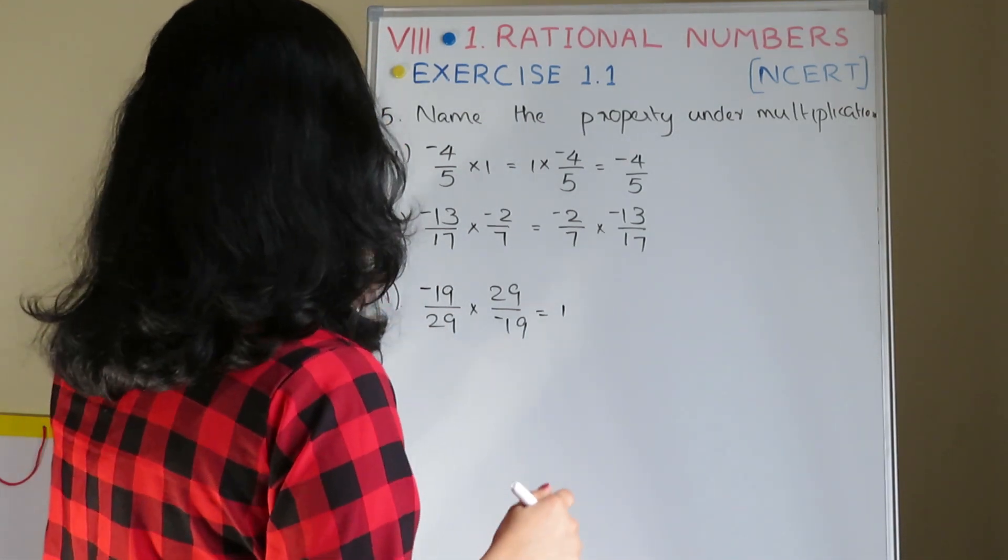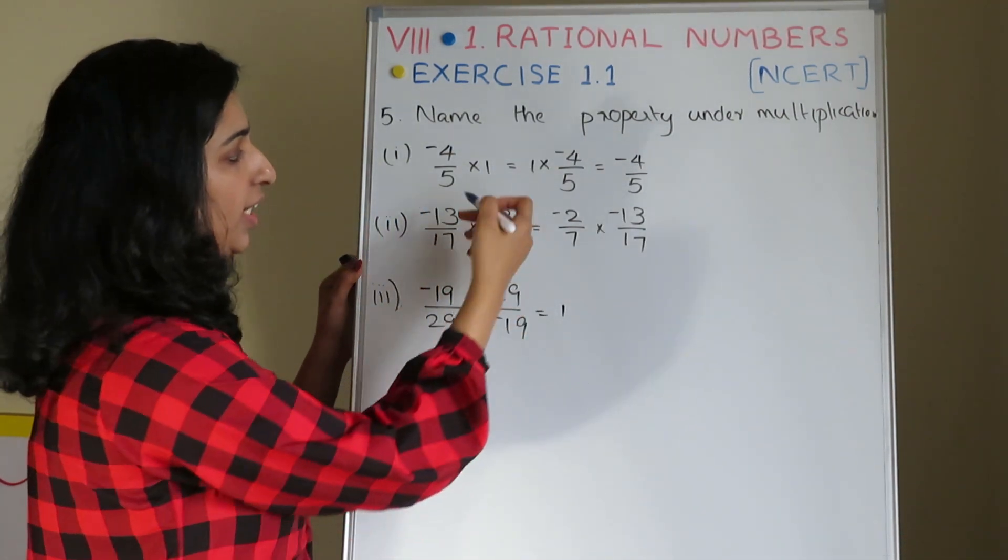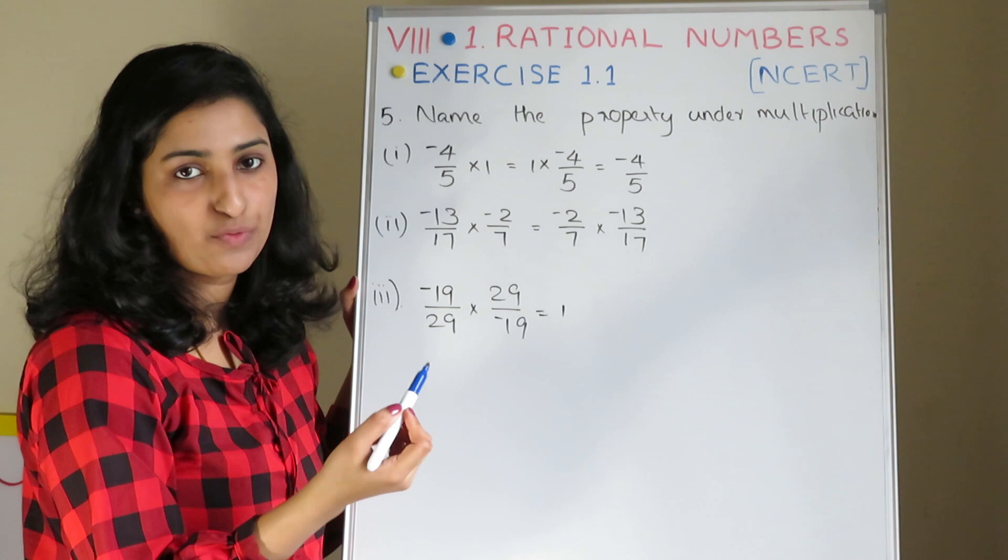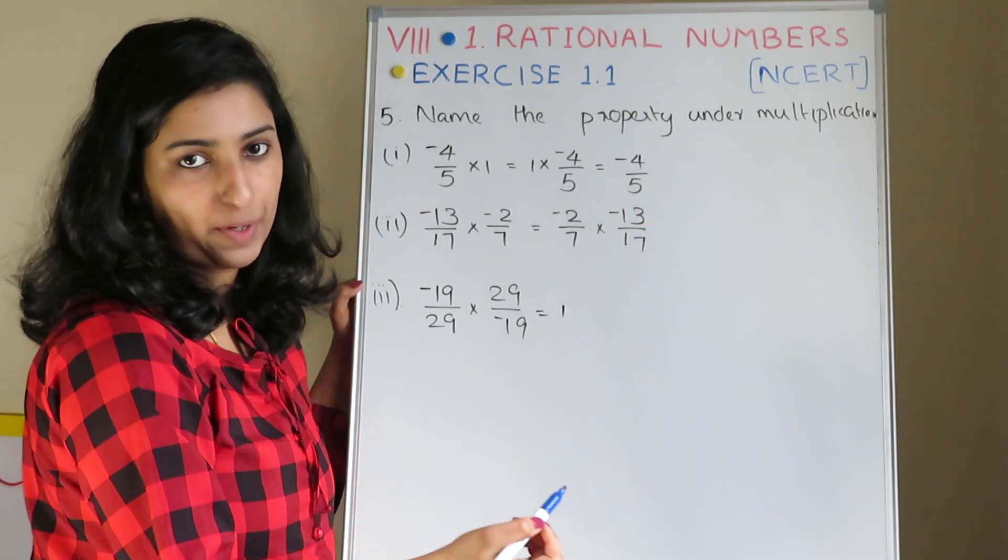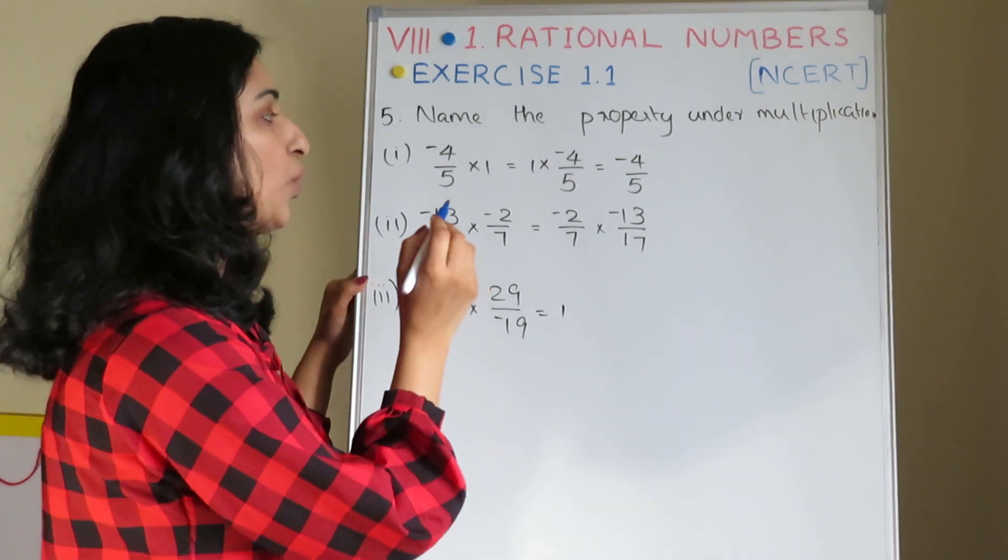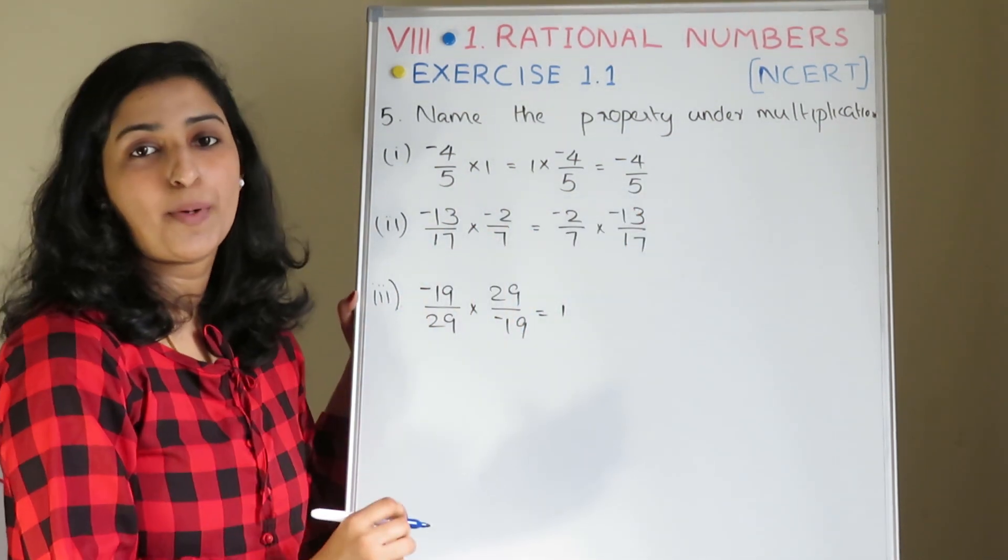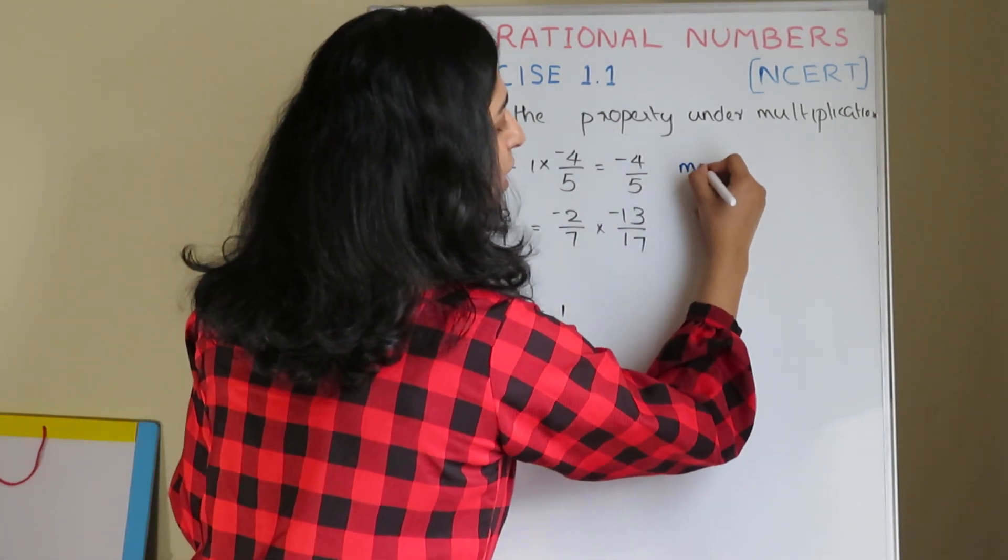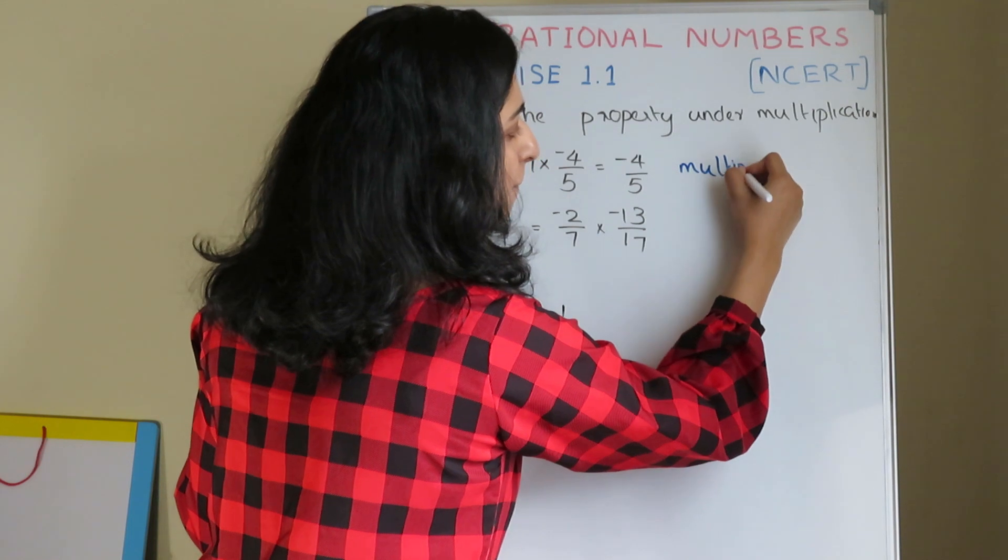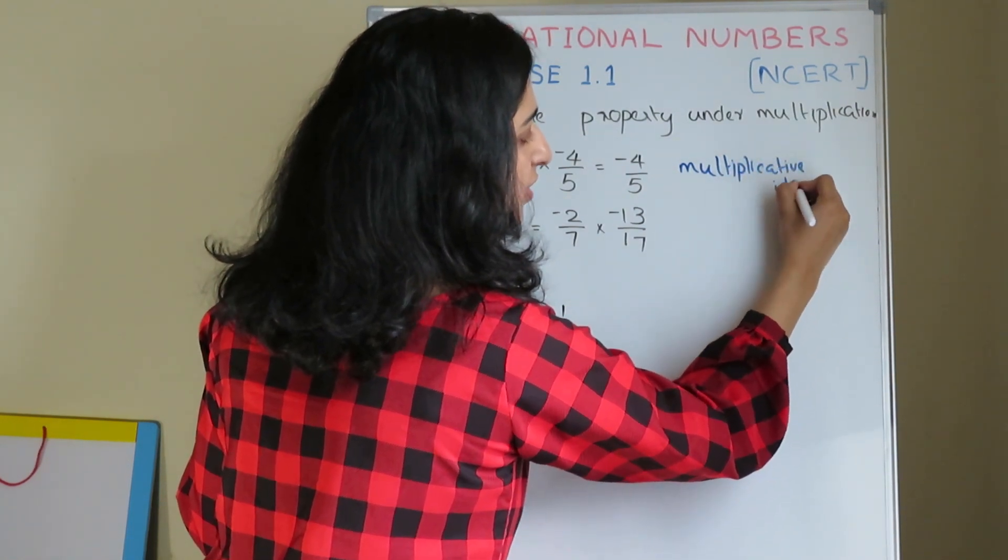First one, here is minus 4 by 5 into 1, which equals 1 into minus 4 by 5. This is the answer, minus 4 by 5. This is the number. This property is called Multiplicative Identity.